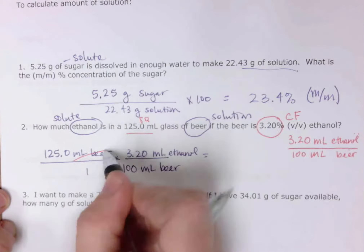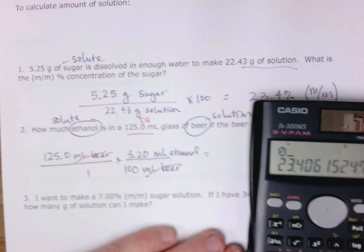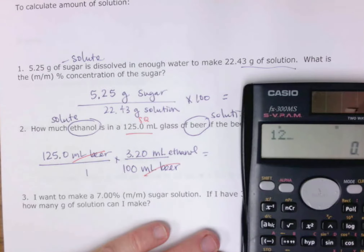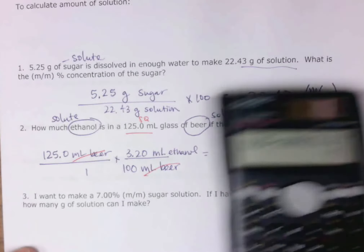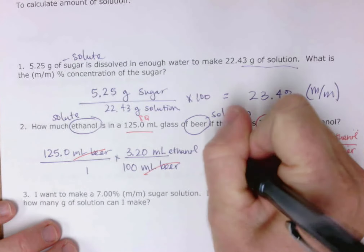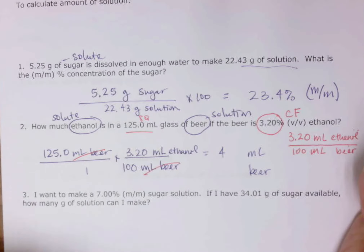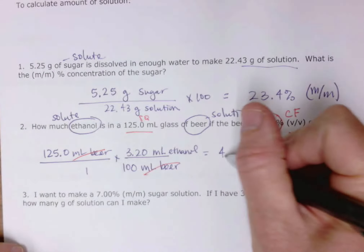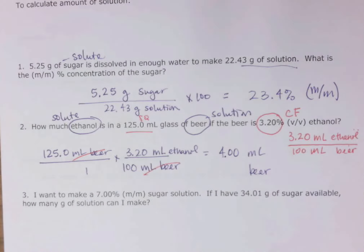So 125 divided by 100 times 3.2 gives us 4 mL of ethanol. Since we don't cover significant figures in this class, 4.0 or 4.00 or just 4 would all be accepted.